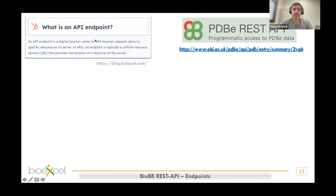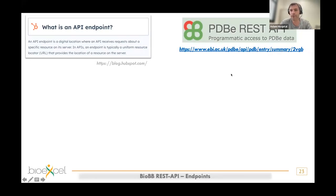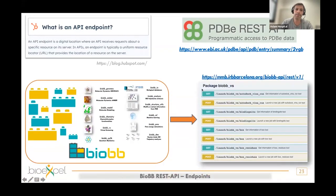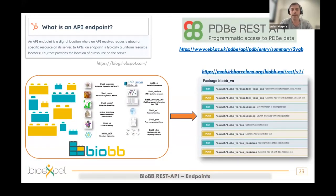A REST API is basically a collection of endpoints — an endpoint is a digital location like a URL. A great example is the PDB in Europe REST API: if you click on a URL with a specific PDB code, you retrieve all the summary information for that entry from the PDB database. Our idea is to generate a collection of endpoints like these for all the different building blocks integrated in the BioExCEL building blocks library, which are numerous. We decided to go with an automatic process to generate all the code behind these endpoints.